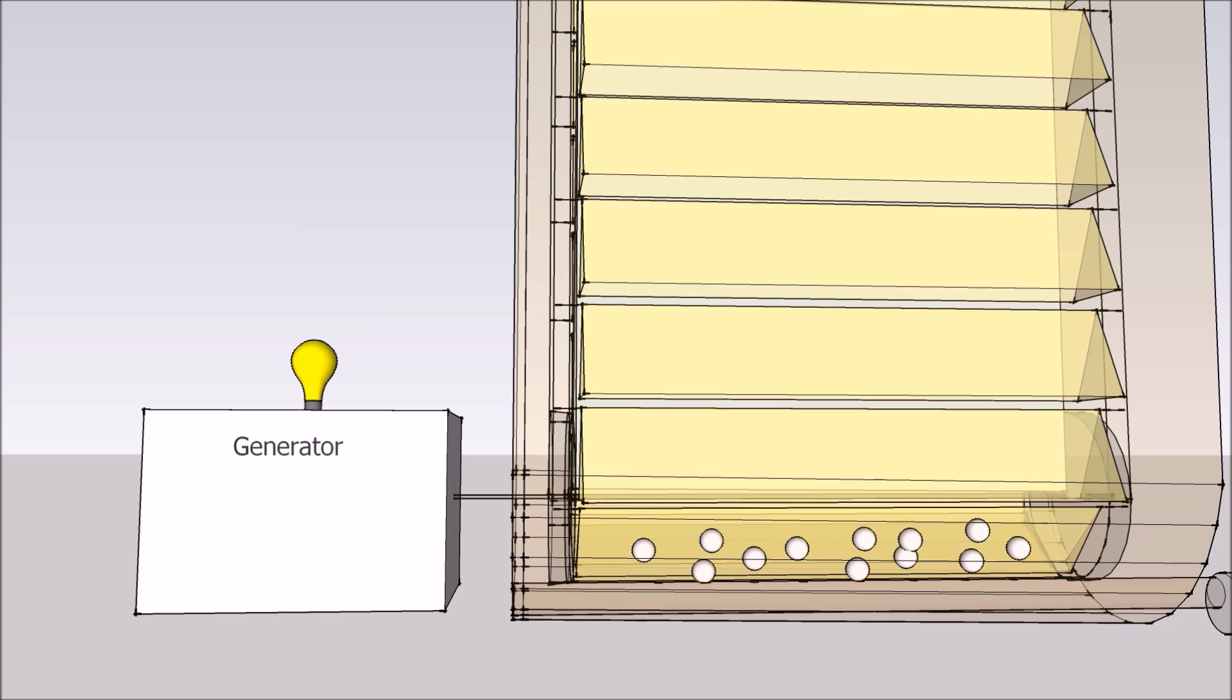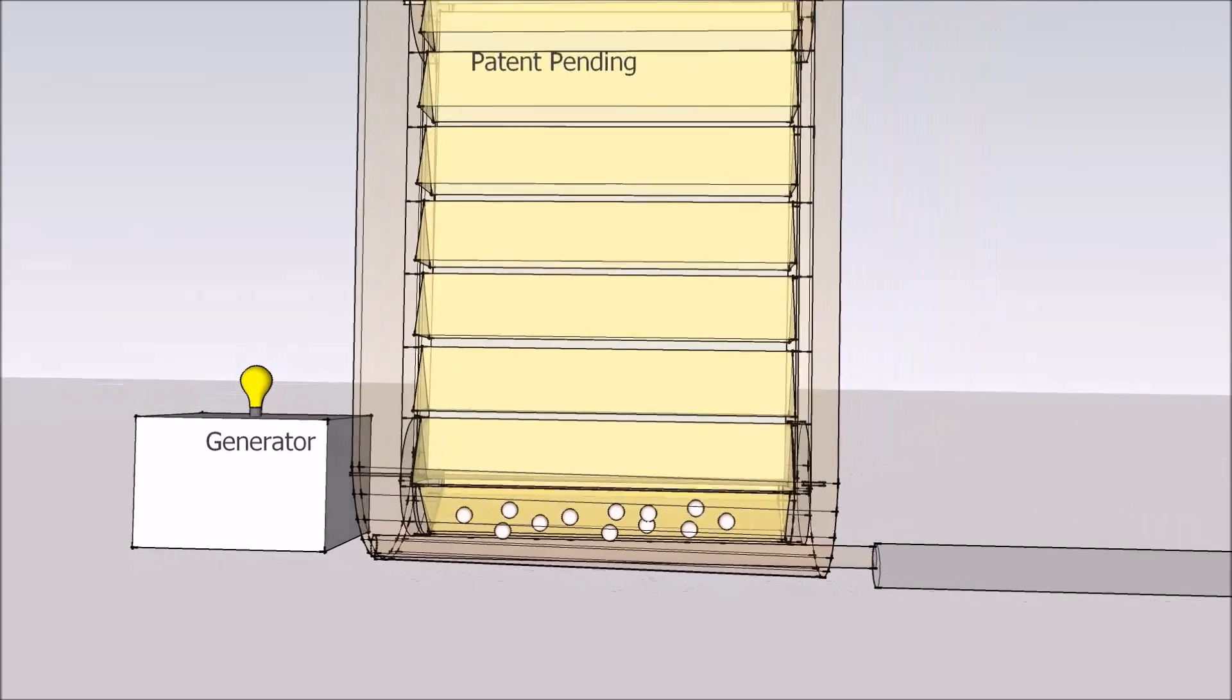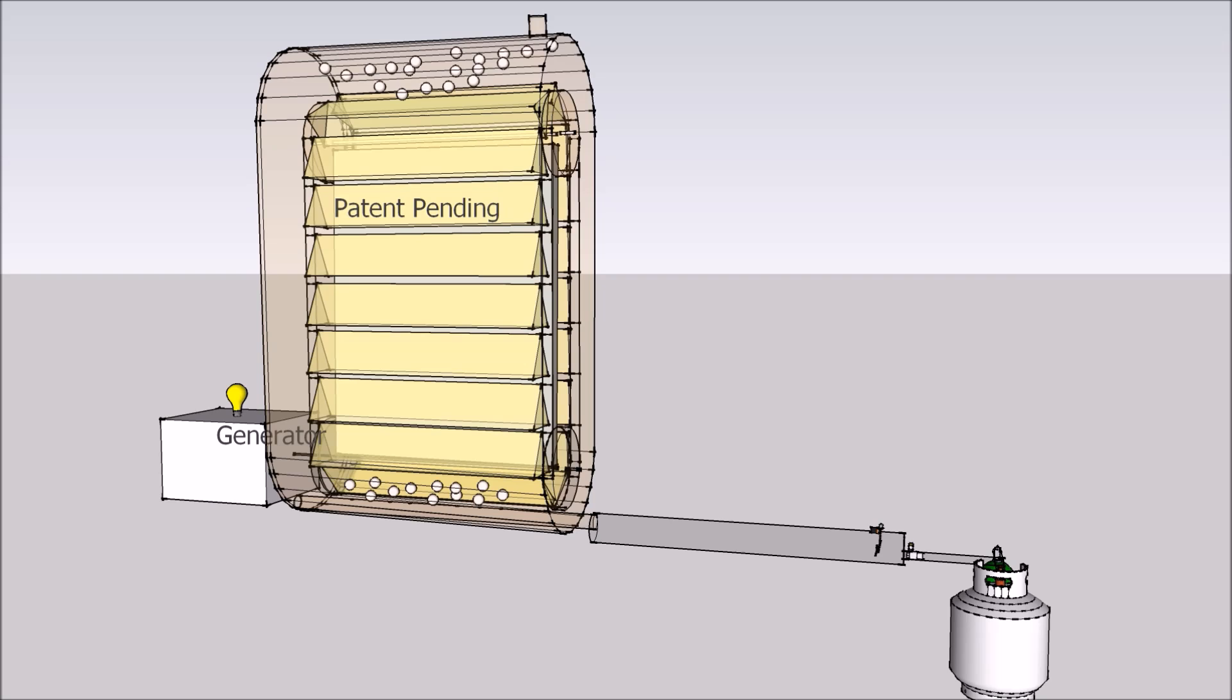The lower sprockets rotate over the driveshaft, which extends out of the combustion chamber and into the generator. The generator then converts the usable drive force into electricity.